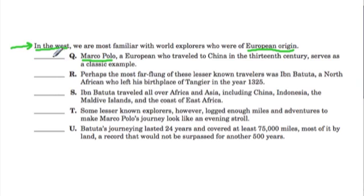Starting with Q makes sense because after introducing the topic, the next sentence says: 'Marco Polo, a European who traveled to China in the 13th century, serves as a classic example.' He's the classic example referenced in the topic sentence, so this becomes our second sentence.